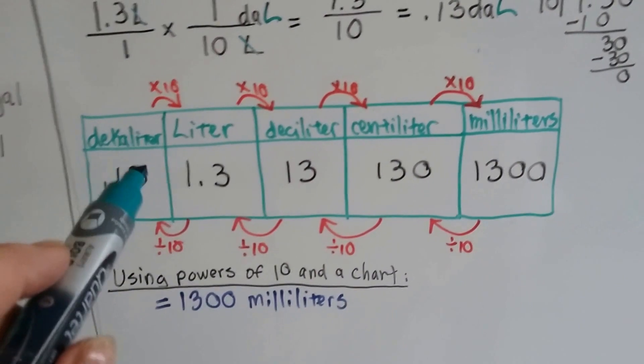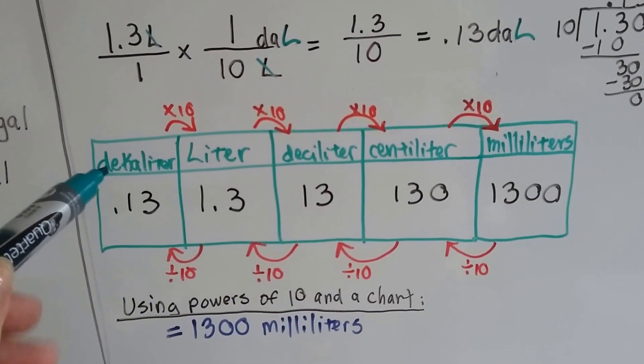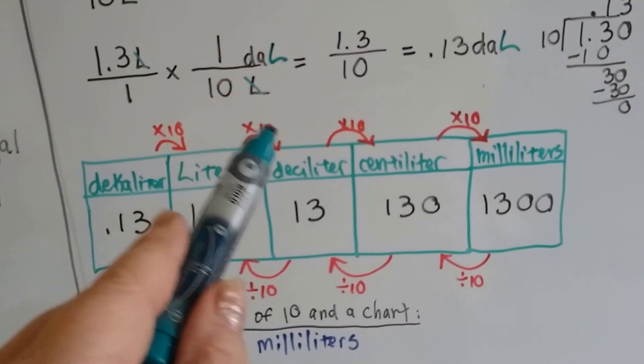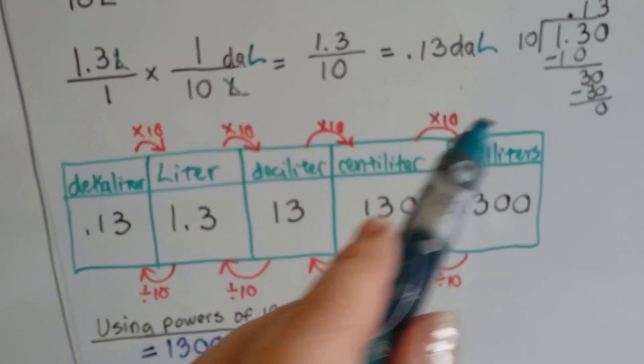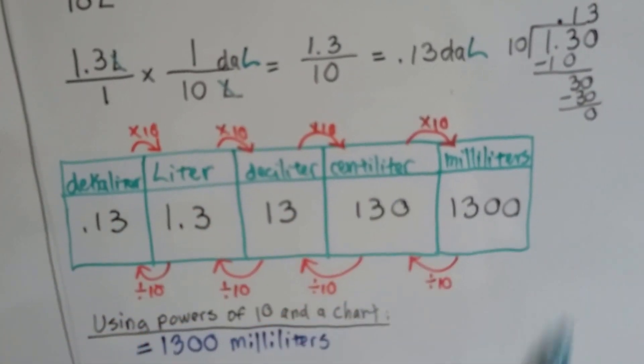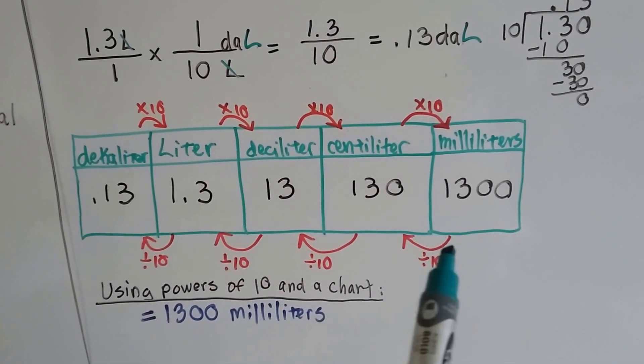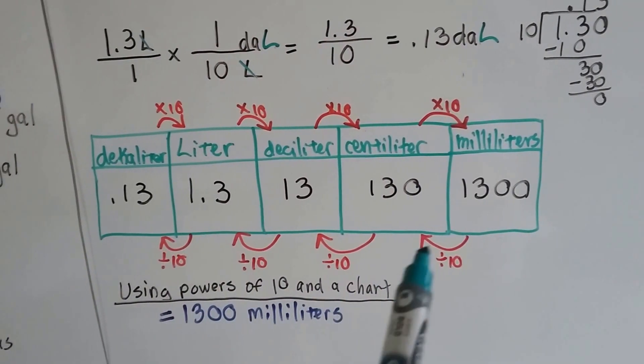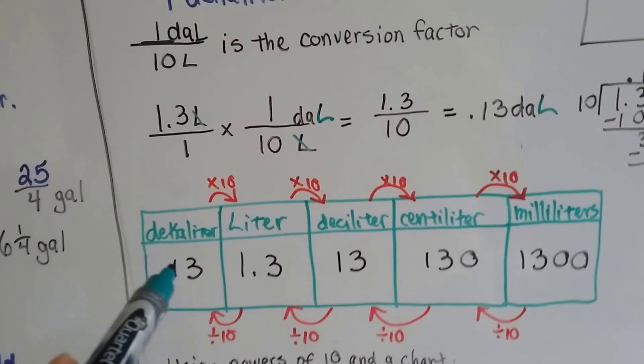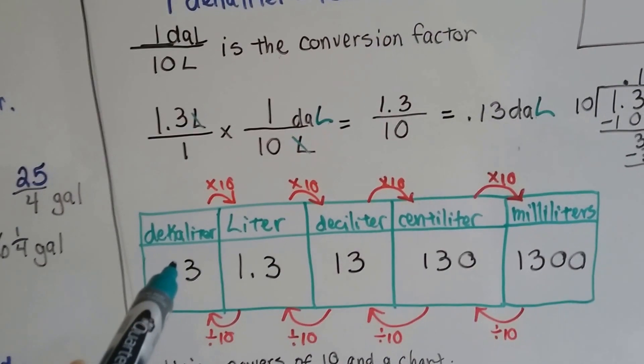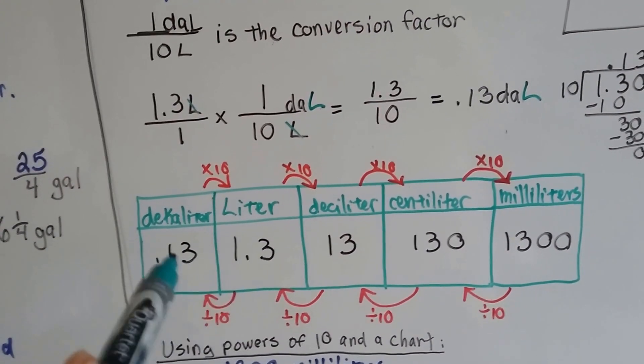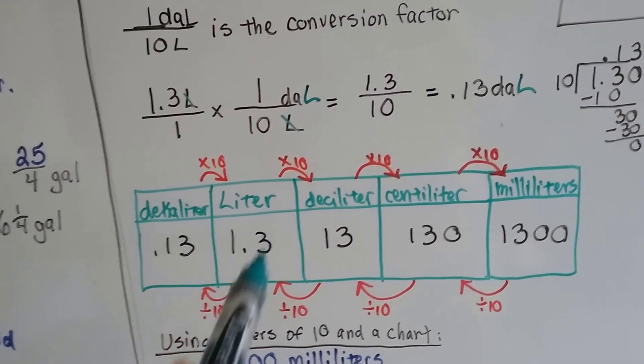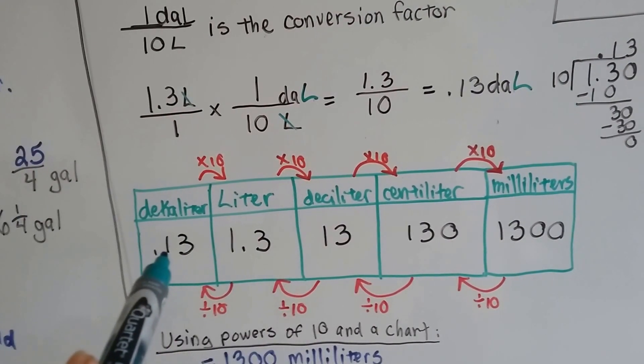If we were to use a table, you can see that when we move to smaller units, we multiply. To go from a liter to a deciliter or a centiliter or a milliliter, we're multiplying by 10 each time we move over. When we're at a smaller, tinier unit and we want to move to bigger units like liters, we divide by 10. This is a division problem. When we went from liter to deciliter, we divided by 10 and it became 0.13.